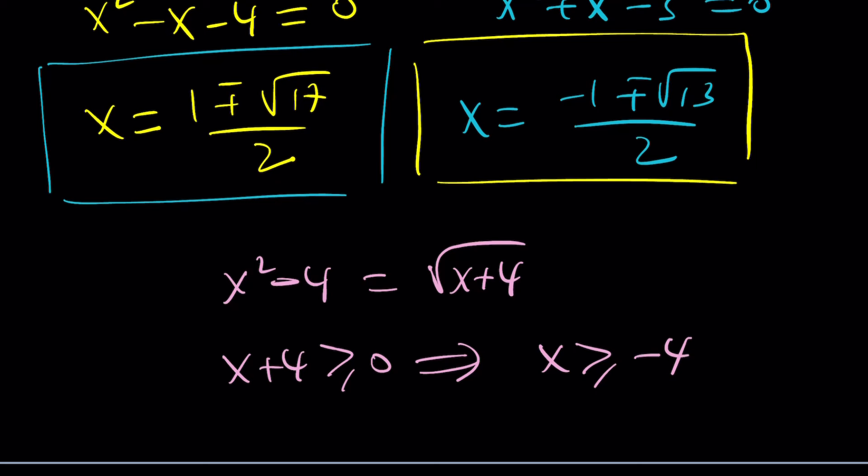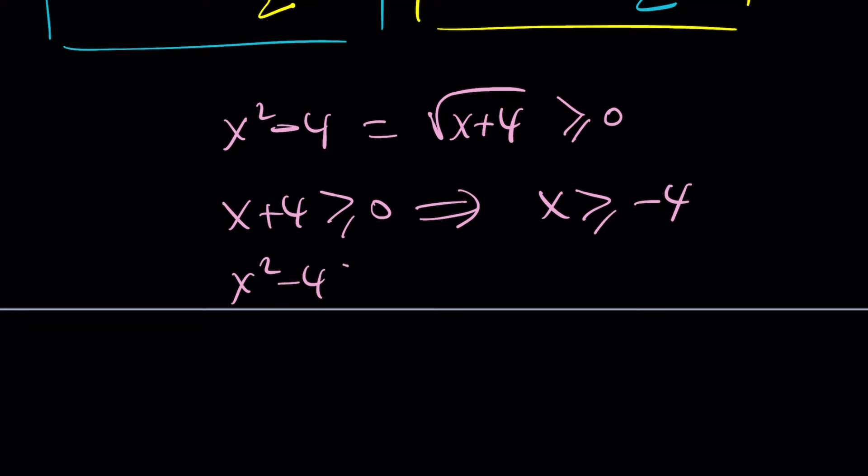That's one of the conditions. But not only that, we also want, obviously, the square root of something to be non-negative. Therefore, x squared minus 4 needs to be greater than or equal to 0. And that implies x squared is greater than or equal to 4. You can kind of find the intersection, so on and so forth. But those are the stipulations that we have.